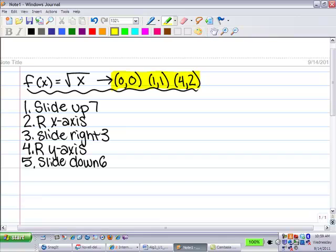The first thing that Allie had on her paper was she took each of those points through those five transformations in that order. So Allie, show us what that work looked like and kind of talk us through. So you have to add seven to all the points. And so I just went (0,7), (1,8), (4,9).